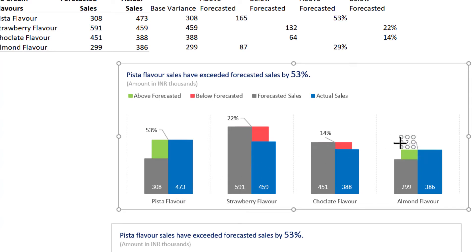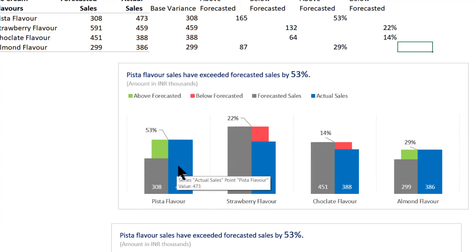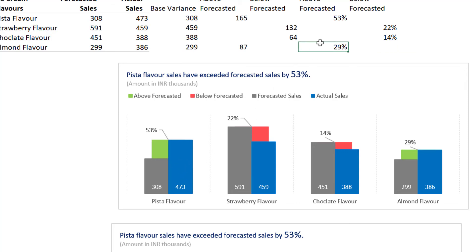This way you can display percentage numbers instead of actual numbers. If the labels are not displaying properly, you can increase the width for the data labels. That's it from my side. See you in the next video where we will show this visual in horizontal format instead of vertical format. Thank you.